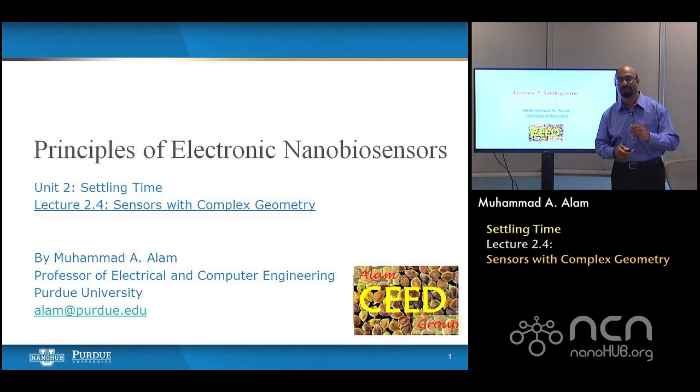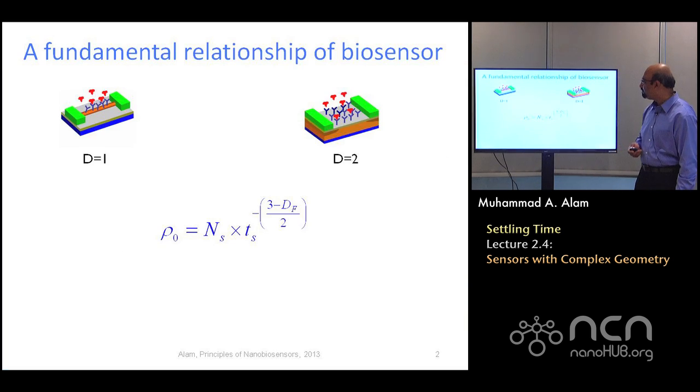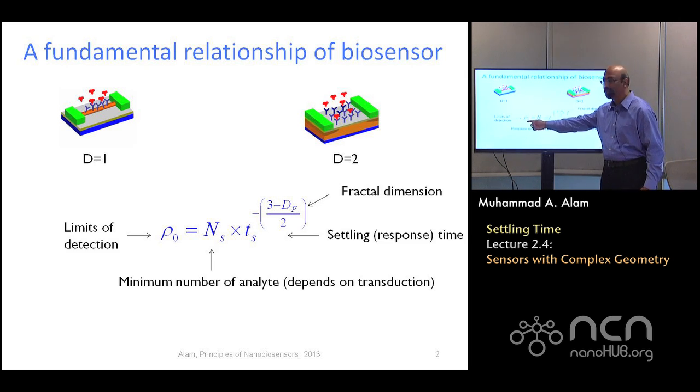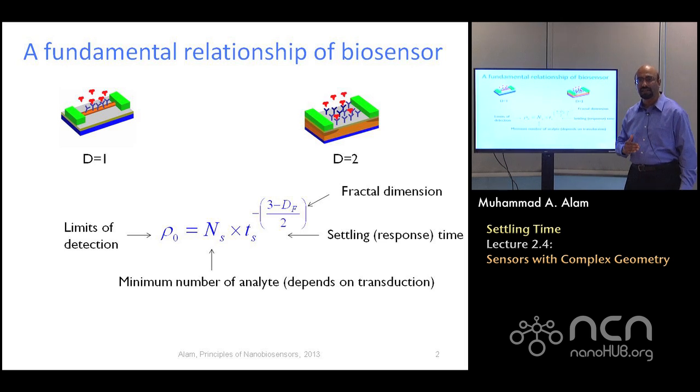This week, we will continue with this discussion about settling time. We're thinking about how long it takes for the biomolecule to come and land on the sensor surface. Now, let me remind you the essence of last three lectures. And essentially what we saw, that there is a fundamental limit to detection, this ρ₀. How low an analyte concentration or biomolecule concentration can you detect? And that depends on two things. One is the settling time. How long are you willing to wait? But equally important, it also depends on the shape of a sensor. That's surprising. That's a little bit of surprise.